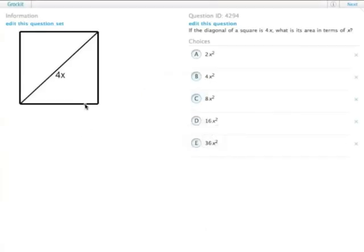So the diagonal of the square is 4x. What is its area in terms of x? Remember that squares are ultimately, they all create 45, 45, 90 triangles.